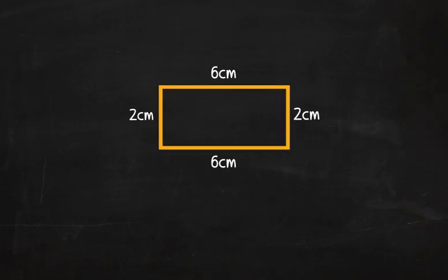For this rectangle, add 2 plus 2 plus 6 plus 6, which equals 16 centimeters.